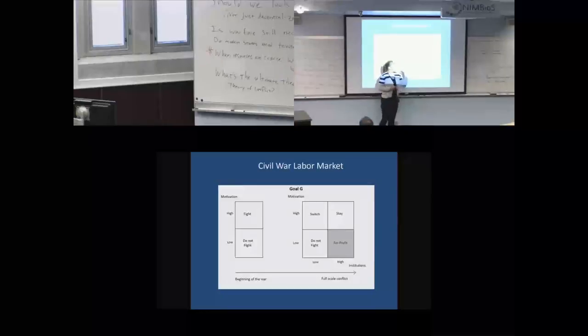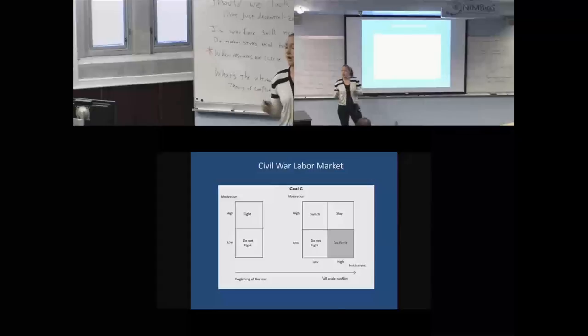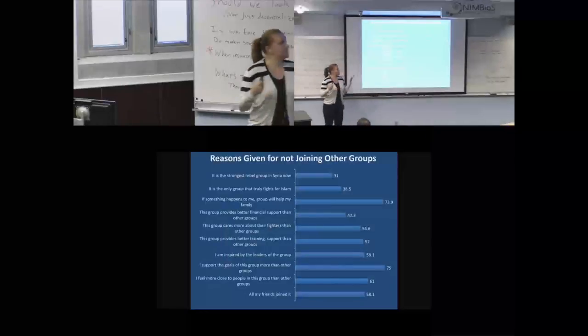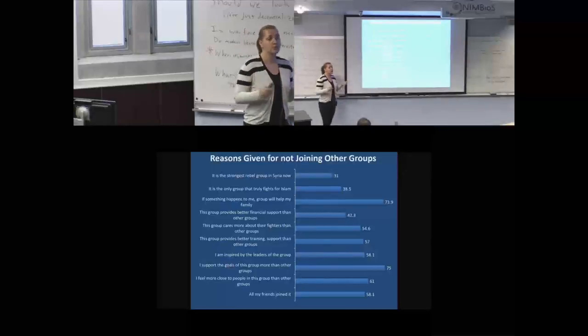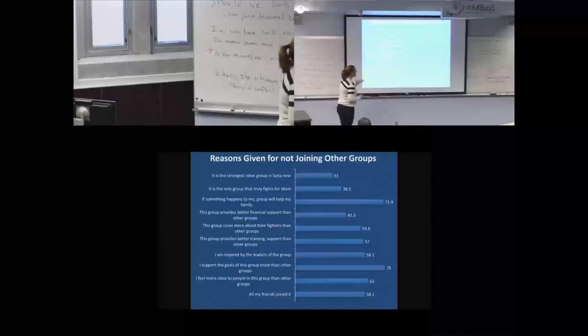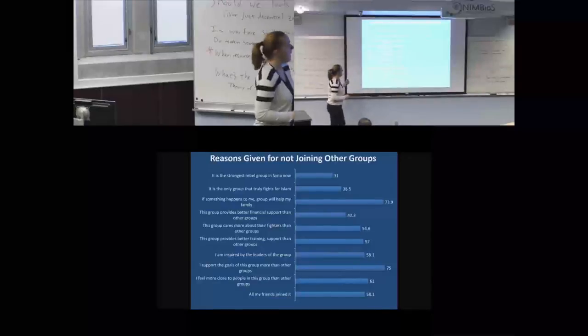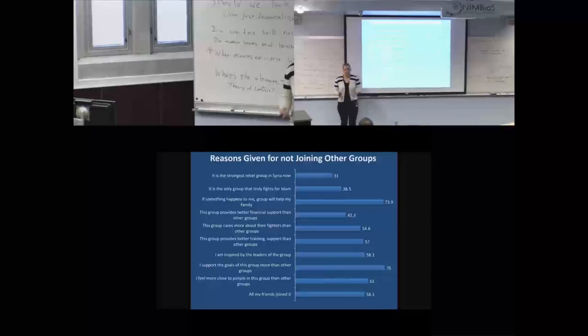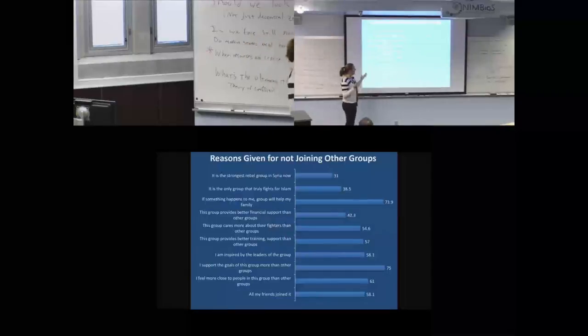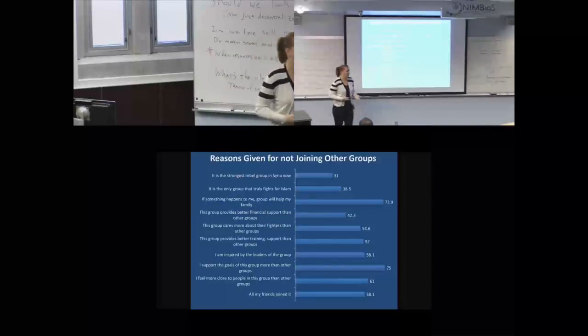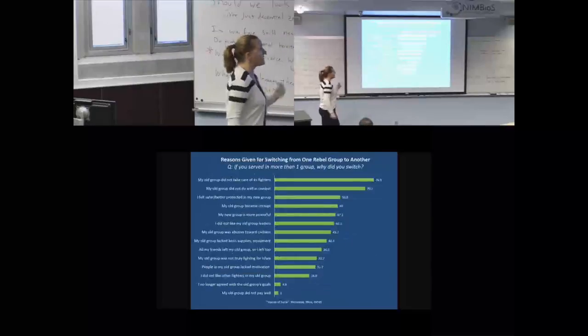Then fighters had to rethink what brigade they want to fight with. And it became an open market. Some people stayed with their group and some people switched to other groups. So we asked, why did you join this particular group? And by now people switched groups three, four times. We know people who switched seven times, but usually it's three, four. Why did you choose your particular group? And the answers here are very institution-related. If something happens to me, the group will help me. It has nothing to do with a flag, with a goal. This group is better organized. They have support. I like the leaders. My friends joined particularly this group, so I went with them. There is nothing about ideology or the flag of the group.